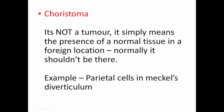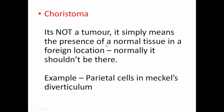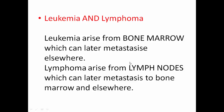Choristoma, in contrast to hamartoma, is also not a tumor. It simply means the presence of normal tissue in a foreign location — tissue that shouldn't be there. Hamartoma was an abnormal overgrowth within the same organ; choristoma is normal tissue present in a foreign location. An example is parietal cells in Meckel's diverticulum, which may end up secreting hydrochloric acid there.